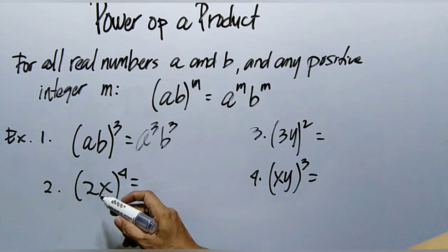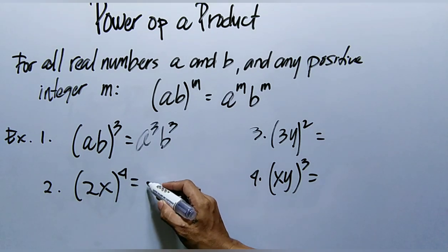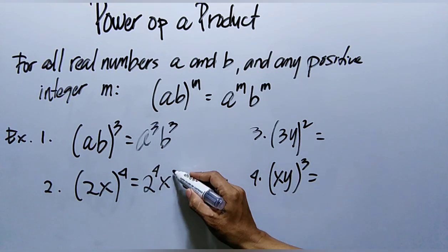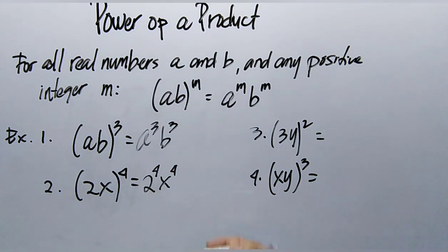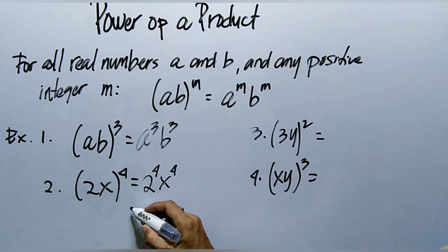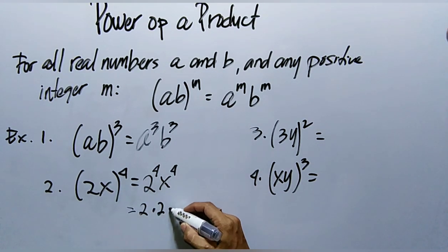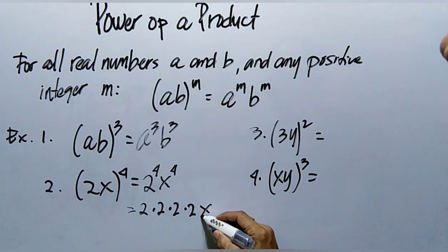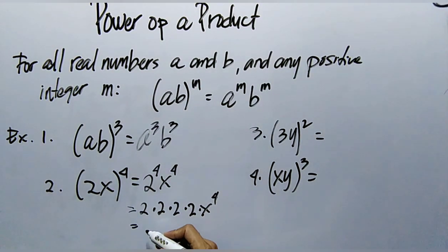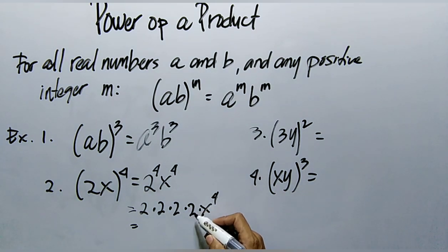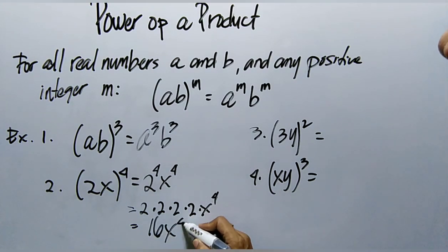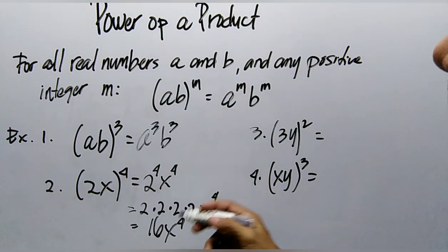Example 2: the quantity of 2x raised to the power of 4. We raise 2 to the exponent 4 and also raise x to the exponent 4, then simplify. 2 raised to the power of 4 means multiplying 2 four times: 2 times 2 times 2 times 2. So 2×2=4, 4×2=8, 8×2=16. The result is 16x to the 4th power. That is our final answer for Example 2.